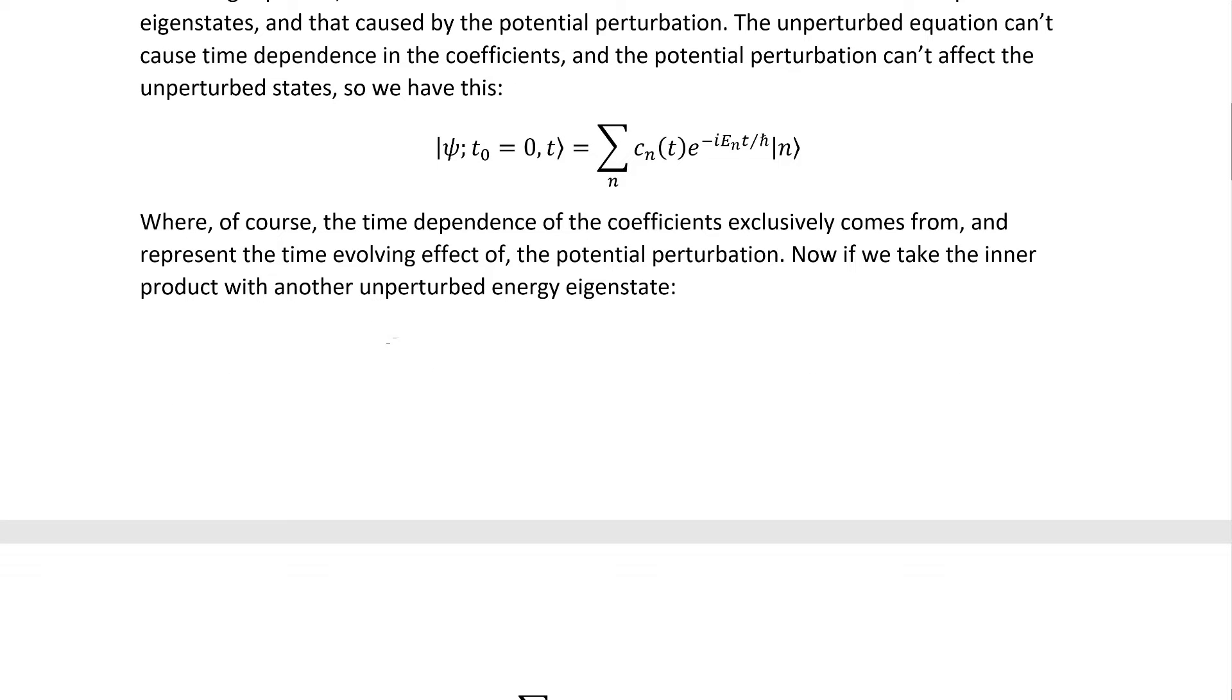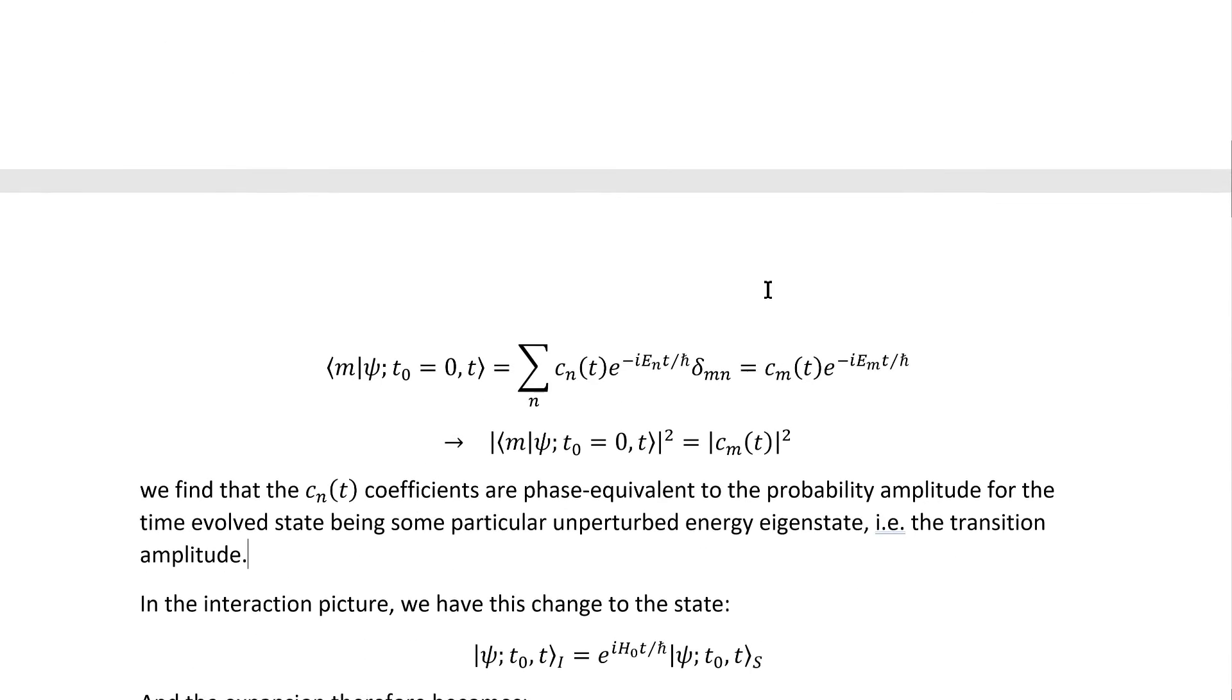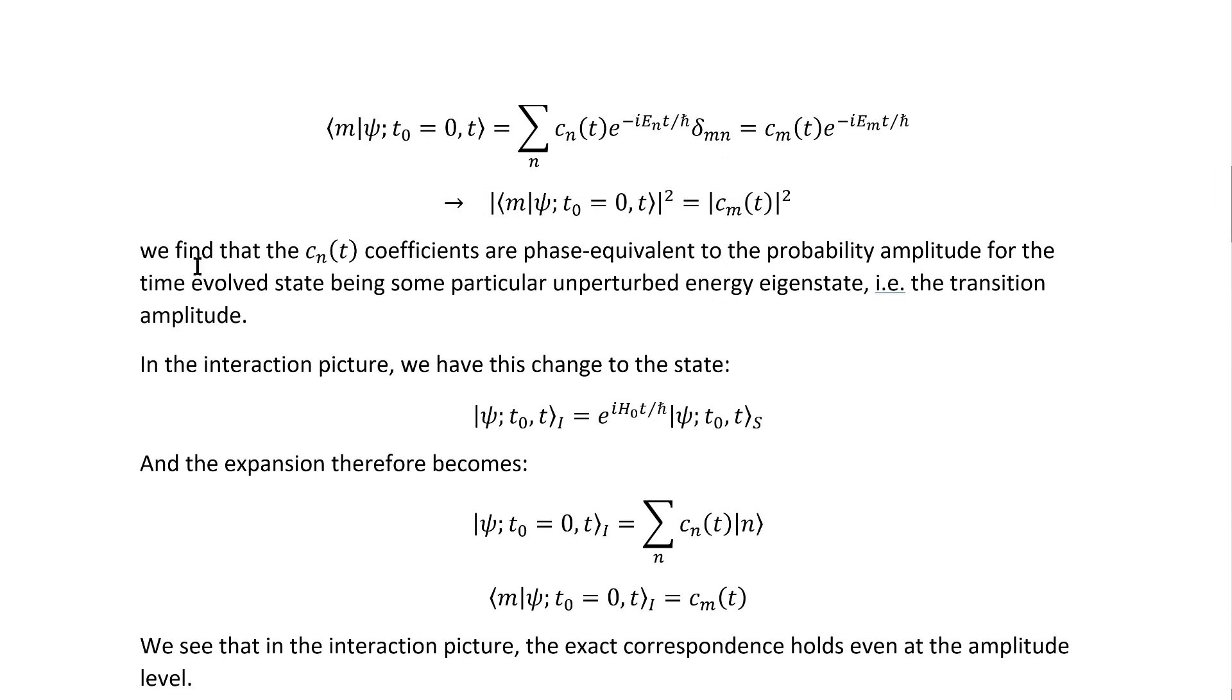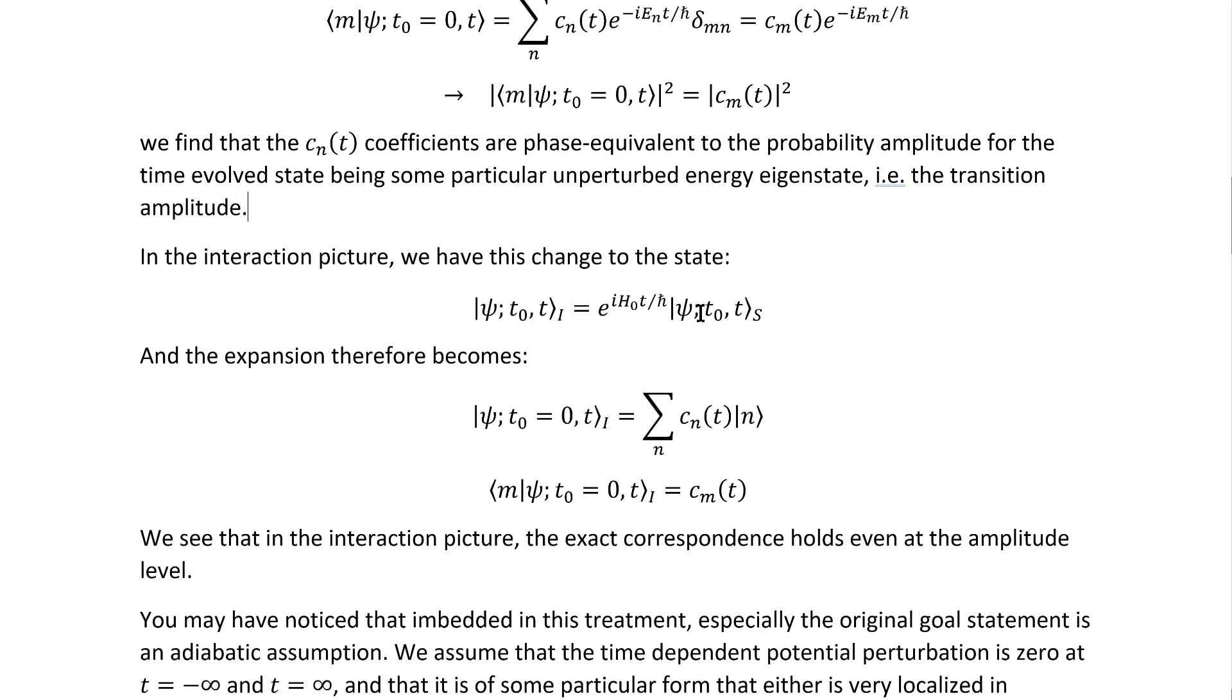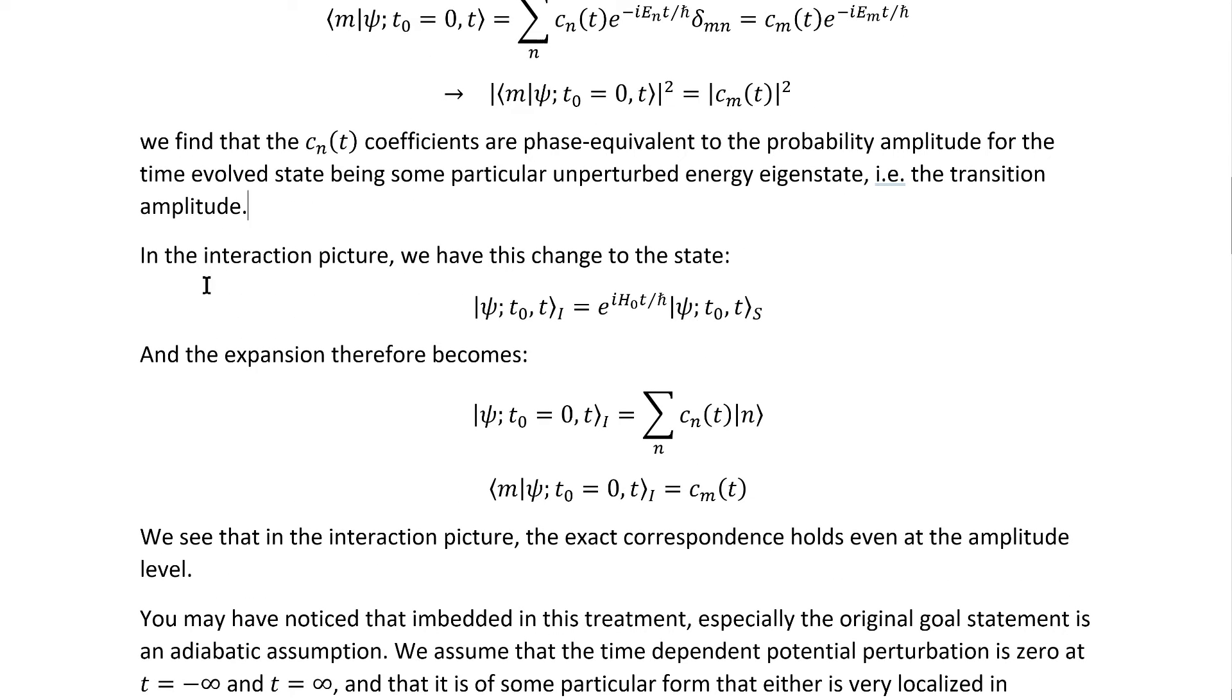Where, of course, the time dependence of the coefficients exclusively comes from and represents the time-evolving effect of the potential perturbation. Now, if we take the inner product with another unperturbed energy eigenstate, we arrive at this conclusion. We find that the CN(t) coefficients are phase-equivalent to the probability amplitude for the time-evolved state being some particular unperturbed energy eigenstate, i.e., they're phase-equivalent to transition amplitudes.